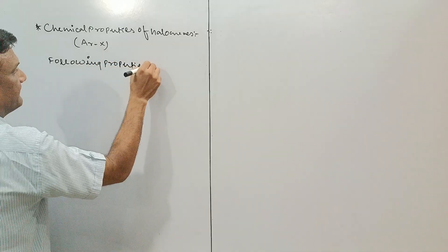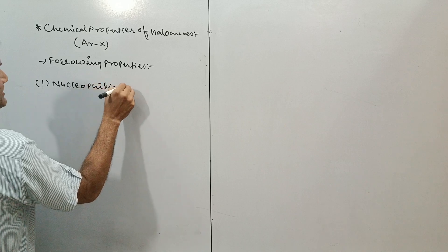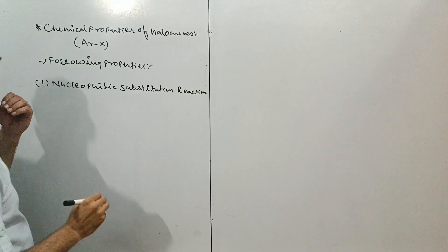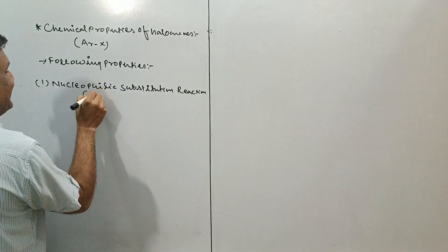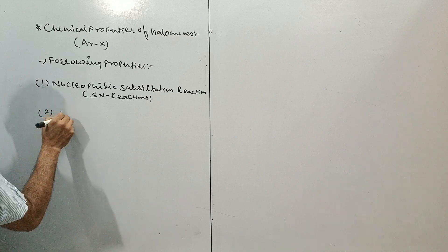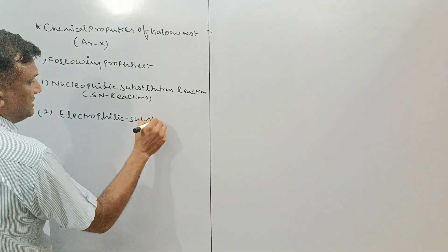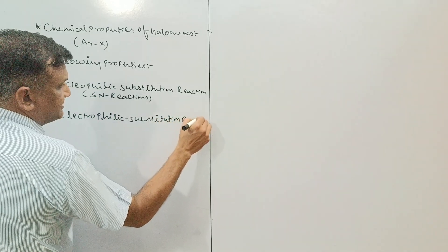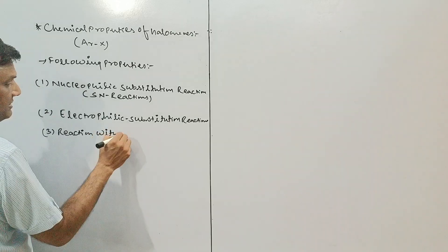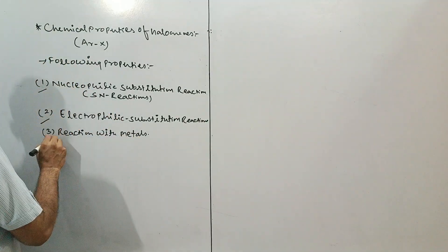The first property is nucleophilic substitution reaction — this is the most important property. Nucleophilic substitution reactions are also known as SN reactions. The second property is electrophilic substitution reactions — this is a separate topic. Third property is reaction with metals. These three important properties are what you have to cover regarding haloarines.